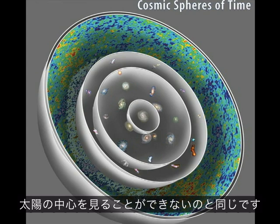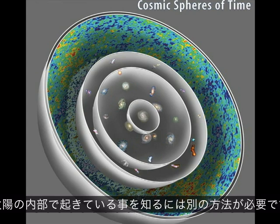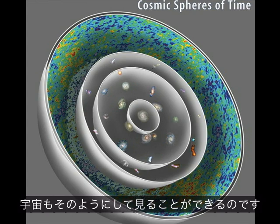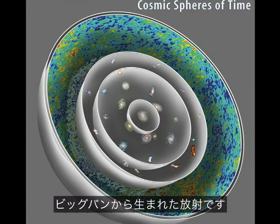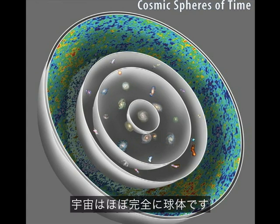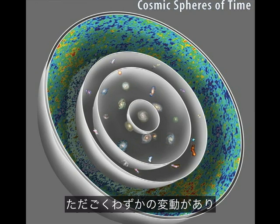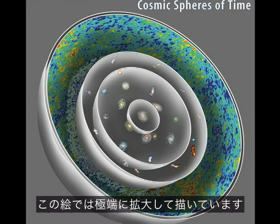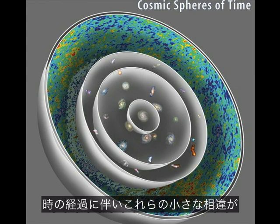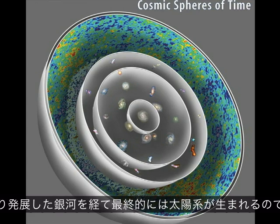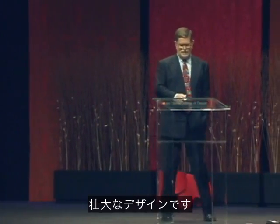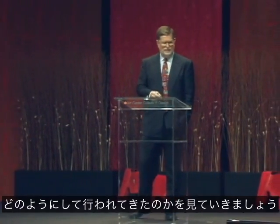There's a part of the universe we can't see because it's so dense and hot that light can't escape — like you can't see the center of the sun and have to use other techniques. The radiation coming from the Big Bang is actually incredibly uniform — the universe is almost a perfect sphere — but there are very tiny variations, shown here in great exaggeration. From those tiny variations, in time sequence, we have to go from these tiny variations to irregular galaxies and first stars, to more advanced galaxies, and eventually to solar systems. It's a big design job.